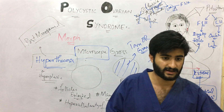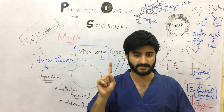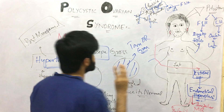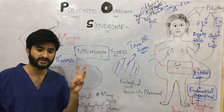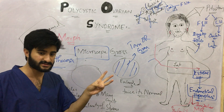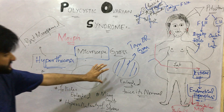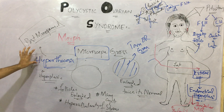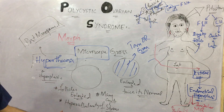To summarize: in polycystic ovarian syndrome there will be hyperandrogenism, infertility or decreased fertility, chronic anovulation, abnormal menstrual bleeding, and many cysts in the ovaries. This condition is associated with three important conditions: obesity, insulin resistance (which can lead to diabetes mellitus), and arteriosclerosis. Grossly, the ovaries are enlarged and tan or gray in color. Under the microscope, we see hyperthecosis or hyperplasia of the stroma with hypercellularity, many cysts, enlarged follicles, and a thickened cortex.